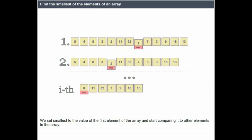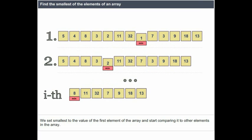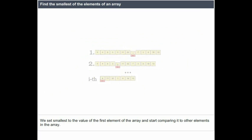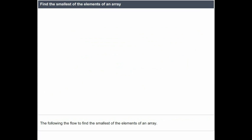We set smallest to the value of the first element of the array and start comparing it to other elements in the array. The following is the flow to find the smallest of the elements of an array.